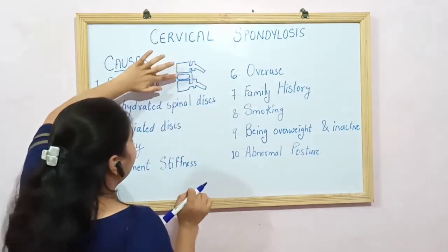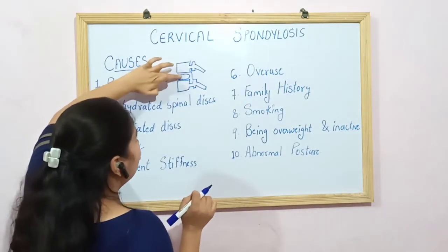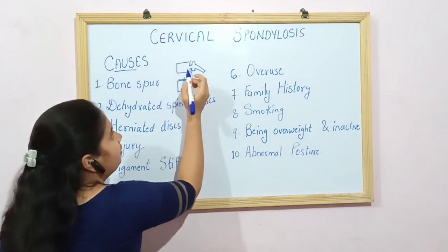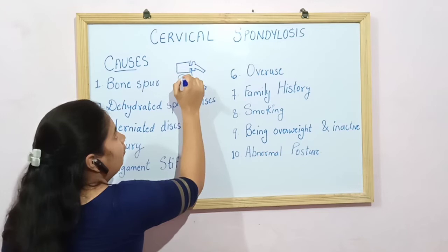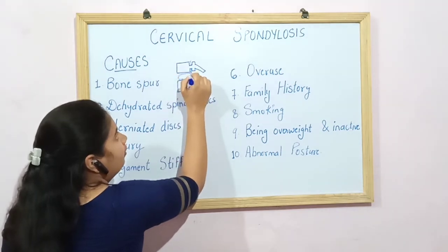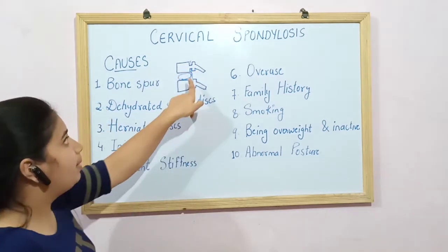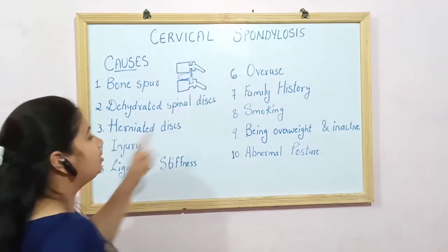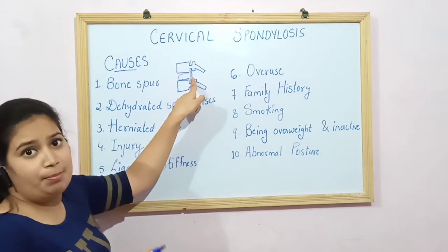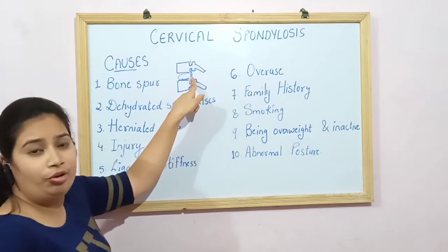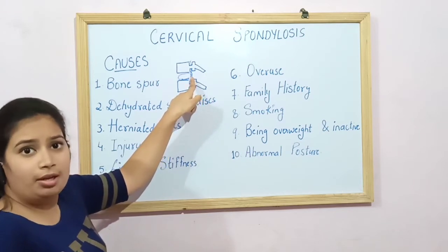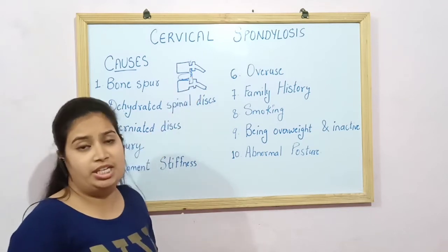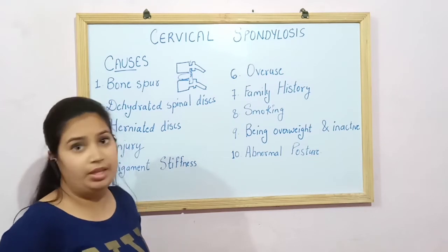The next cause is the herniated disc. If the disc bulges out due to over-pressure or any other condition, it protrudes beyond your vertebral line, compressing your spinal cord and nerve roots, and causing symptoms of cervical spondylosis such as tingling, numbness, and radiating pain from the neck up to the arm.